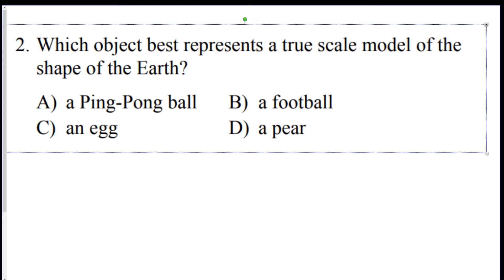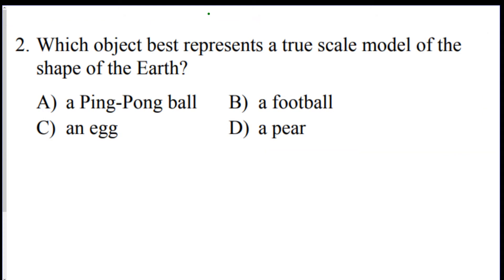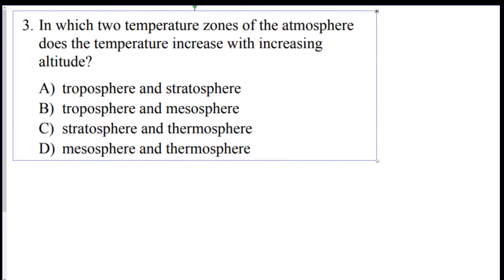Question two: which object best represents a true scale model of the shape of the earth? Even though the earth is an oblate spheroid, pictures from space cannot distinguish that it's wider than it is tall. Any time you see the earth it looks like a perfect sphere, so you would pick the most perfect sphere — the ping pong ball would be the right answer.